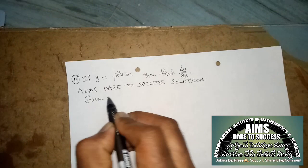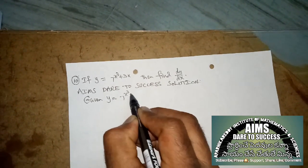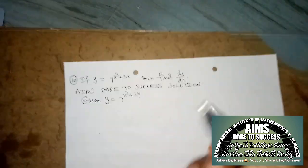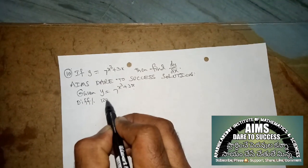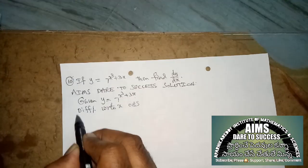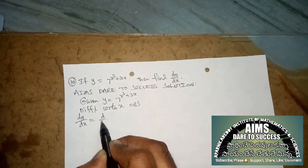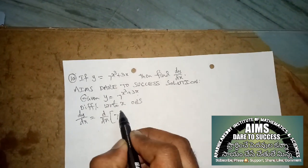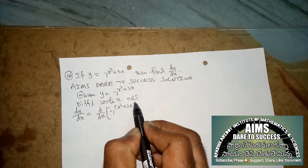We are writing the given value: y equals 7 power (x³ + 3x). Differentiating with respect to x on both sides, we get dy/dx equals d by dx of 7 power (x³ + 3x).